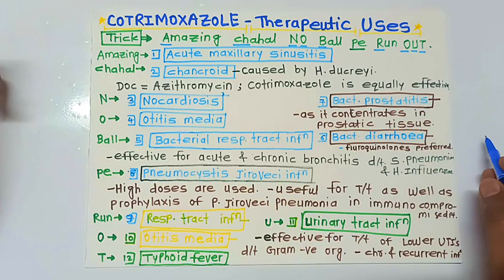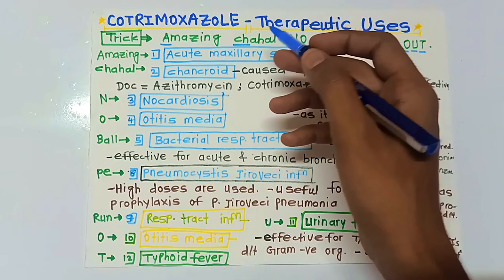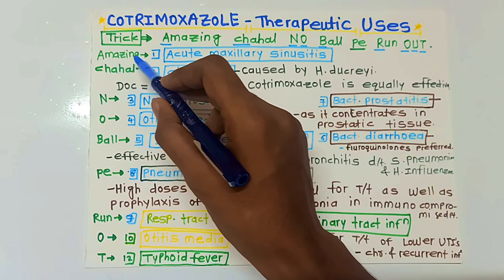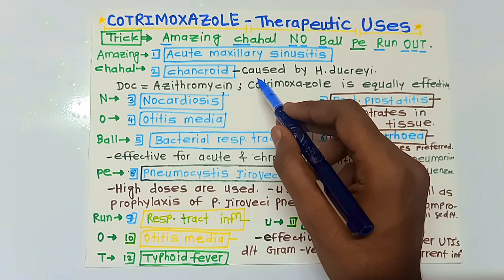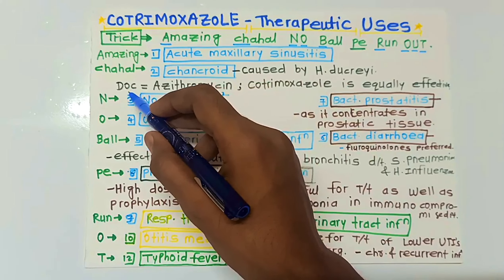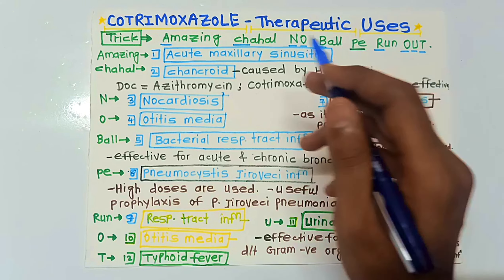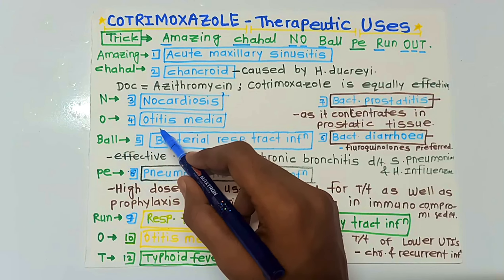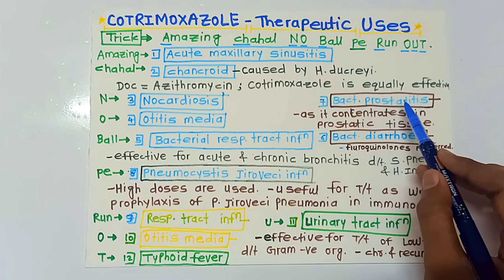In this particular video we are going to see the therapeutic uses of Co-Trimoxazole. For this we have a trick: 'Amazing Chahal, no ball pe run out.' A is for acute maxillary sinusitis. Chahal is for chancroid, caused by Haemophilus ducreyi infection. The drug of choice for chancroid is azithromycin, but Co-Trimoxazole is equally effective. N is for nocardiosis.